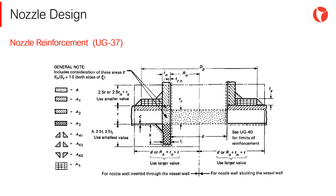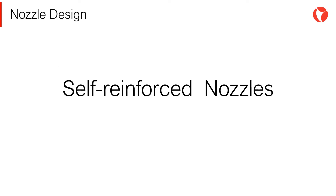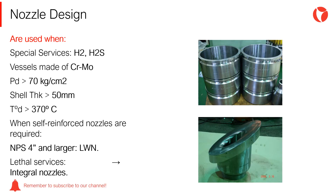Self-reinforced nozzles are mainly used when the pressure-temperature requirements are severe and/or when the fluid is highly corrosive. The goal of this type of nozzle is to minimize the number of welded joints in the vessel, increasing the reliability of the equipment. The ASME code Section 8 establishes how these nozzles must be designed, but it does not indicate in which cases to use them.